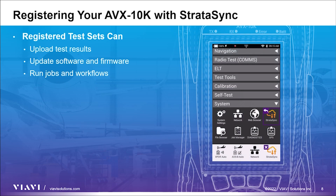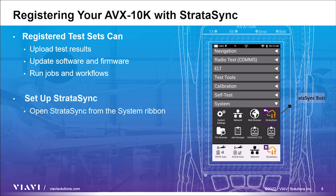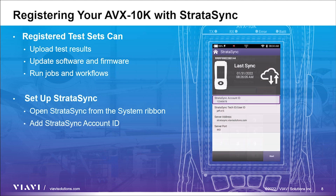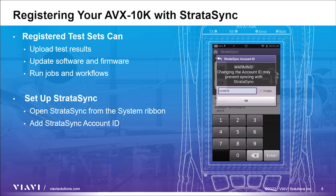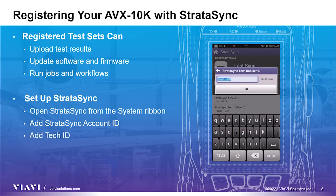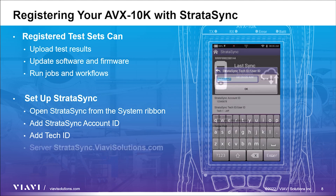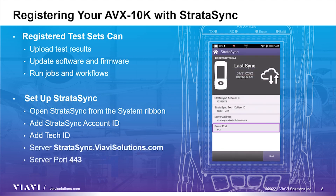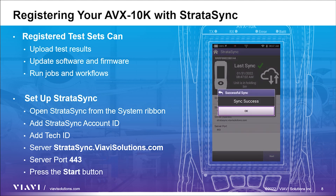Now that your account has been set up and you are a registered user, it is time to add your AVX-10K to the Stratasync system. Turn on your AVX-10K and open the System Ribbon and click on the Stratasync application. Enter the Stratasync account number provided in your original account registration email. This can also be found next to your name on the Stratasync website. Next, enter a Stratasync tech ID slash user ID. The server address should be stratasync.viavisolutions.com and the server port field should be set to 443. Once all the sync fields have been filled out and the test set is connected to the internet via Wi-Fi or Ethernet, press the Start button to initiate the synchronization process.